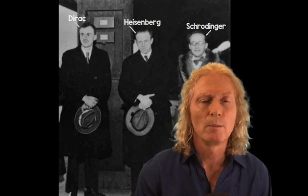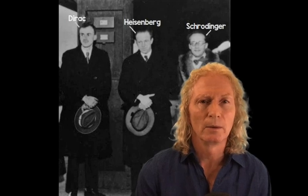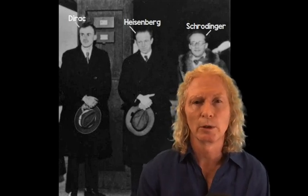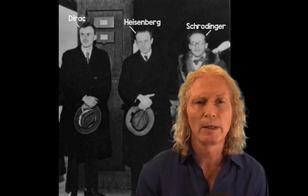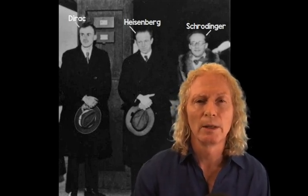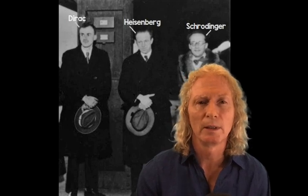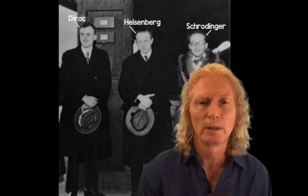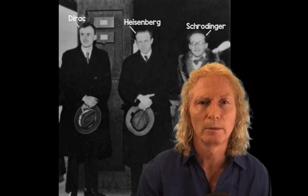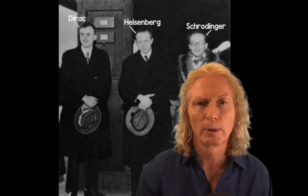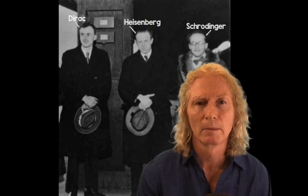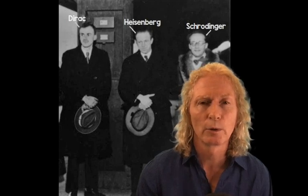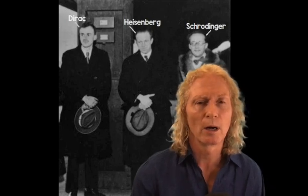Dirac did many things in quantum mechanics that we're going to learn about, but one thing that you may not realize is that in those little squiggly designs in the stones at the entrance to the new mathematics building, and the same type of squiggly designs in the glass in the entryway — those are Dirac's bras and kets.